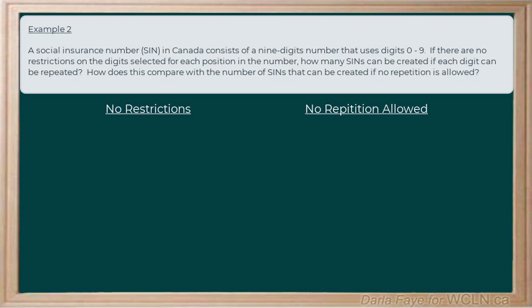Let's start with this scenario where there's no restrictions or that means that repetition is allowed. So, in this case, we can choose from all possible digits, zero through nine, for each digit of the social insurance number. So, I'm just going to draw out nine blanks here that are going to represent each digit in the SIN number.